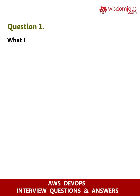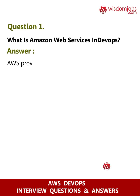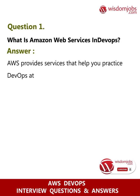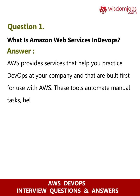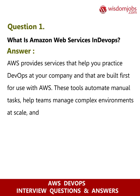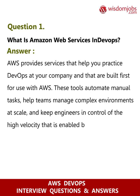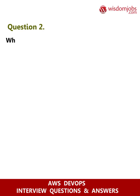Question 1: What is Amazon Web Services in DevOps? Answer: AWS provides services that help you practice DevOps at your company, and that are built first for use with AWS. These tools automate manual tasks, help teams manage complex environments at scale, and keep engineers in control of the high velocity that is enabled by DevOps.